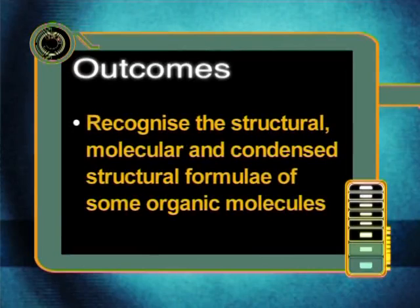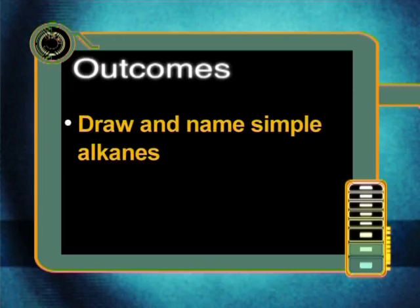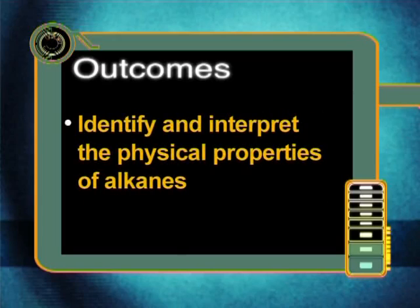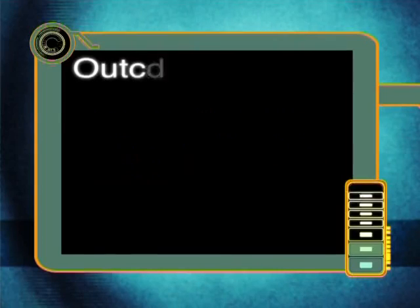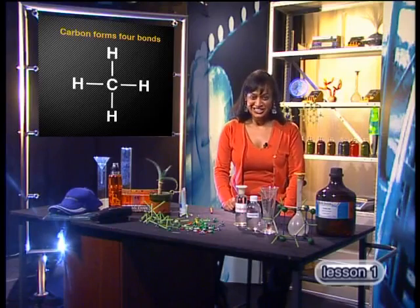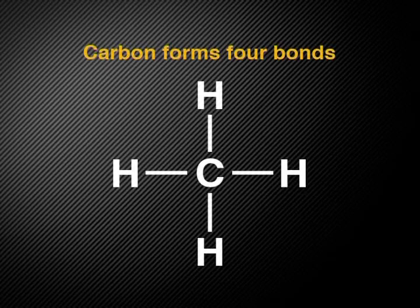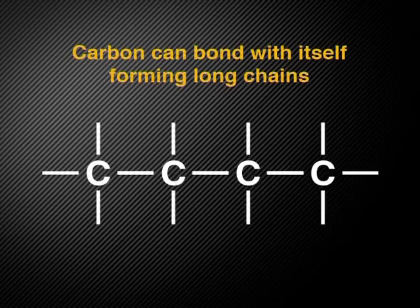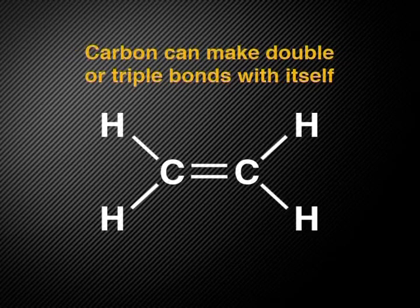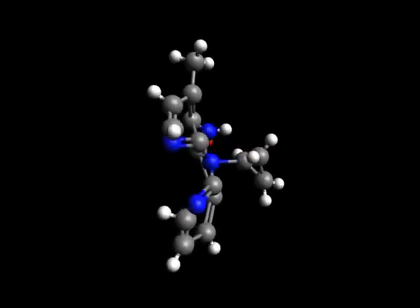By the end of this lesson, you should be able to recognize the structural, molecular, and condensed structural formulae of some organic molecules, draw and name simple alkanes, and identify and interpret the physical properties of alkanes. Each carbon atom can form four bonds. Carbon can bond with itself to form long chains and rings, and can also make double or triple bonds. Many lengths and shapes of carbon chains can be formed because of these characteristics.